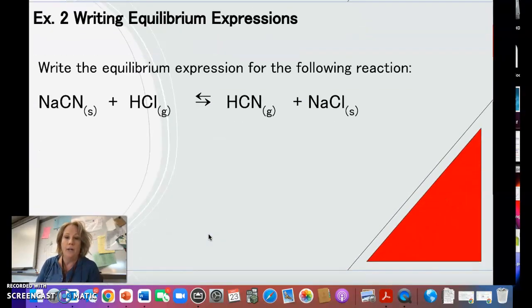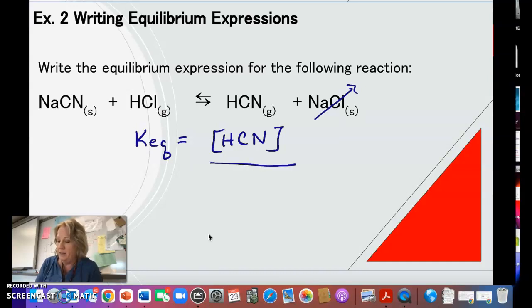So you have to be able to write the expression because eventually we're going to calculate it. So we'll do one more equilibrium expression here. Again, it's always the products on the right side, so I'm going to include the HCN. It's going to be to the first power. I'm not going to include the sodium chloride because it's a solid. I'm not going to include this sodium cyanide either, and then I would have HCl.